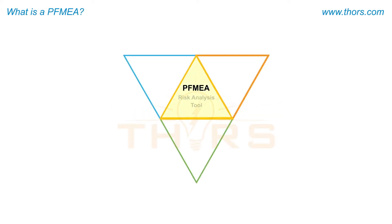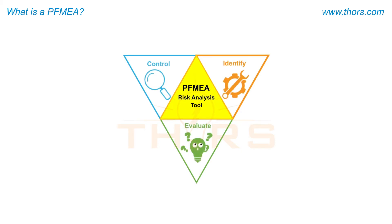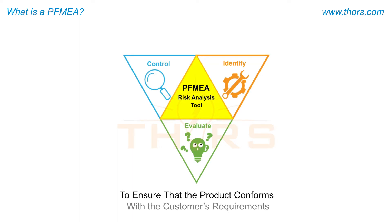A PFMEA is a risk analysis tool used to identify, evaluate, and control the potential failure modes of a manufacturing process to ensure that the product conforms with the customer's requirements.